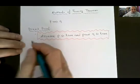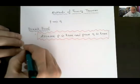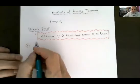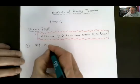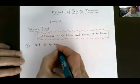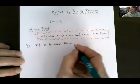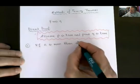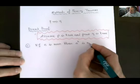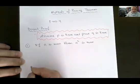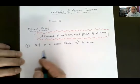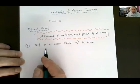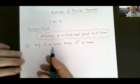Here are a few examples. Example one: if n is even, then n squared is even. Before you prove anything, you need to really understand what you're trying to prove. You're trying to say that if I have an integer n that is even, say 4, if I square it I get 16, which is even.